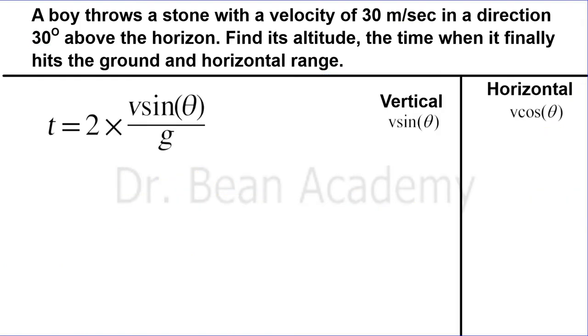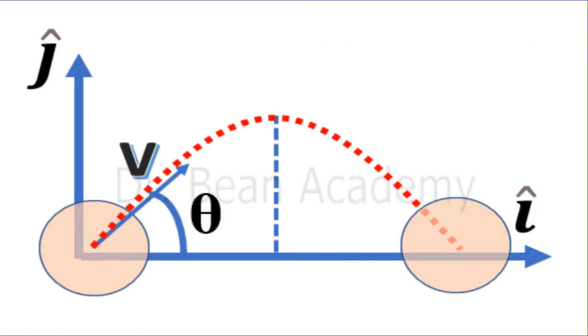Now it's time to calculate the time of flight, the total time it will take for the stone to hit the ground. I want to clear another point before I solve this part of the question. Suppose this is a projectile and it starts its journey with some initial velocity v and finally it hits the ground here.